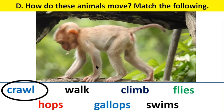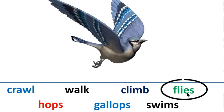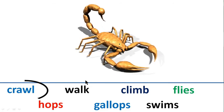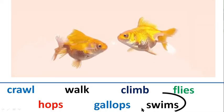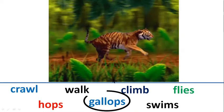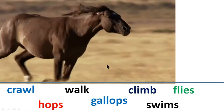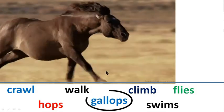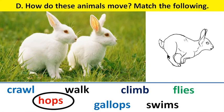Monkey crawls. Birds fly. This one is crawling. Fish swims. Tiger gallops. Horse gallops like tiger. Rabbit hops — this rabbit is hopping like a frog.